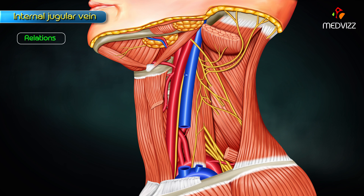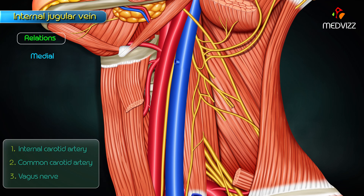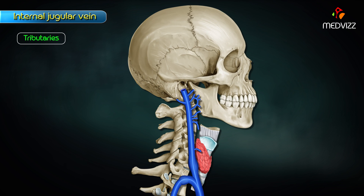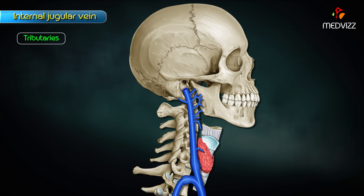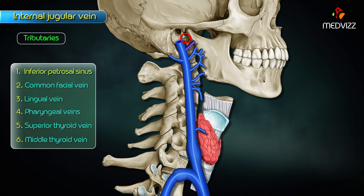The medial relations are the internal carotid artery, common carotid artery, and the vagus nerve. The tributaries of the internal jugular vein include the inferior petrosal sinus, common facial vein, lingual vein, pharyngeal veins, superior thyroid vein, and the middle thyroid vein.